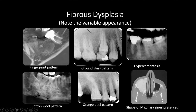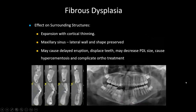Fibrous dysplasia expands into the sinuses but maintains the shape of the sinus with intact cortical borders. Teeth associated with fibrous dysplasia often have hypercementosis. Other signs include expansion of the mandible with ground glass appearance, thinned but intact cortical borders, displaced teeth, decreased periodontal ligament size, and complications for orthodontic treatment. The mandibular canal may be superiorly displaced — one of the only conditions that does this, as most displace it inferiorly — a hallmark feature.